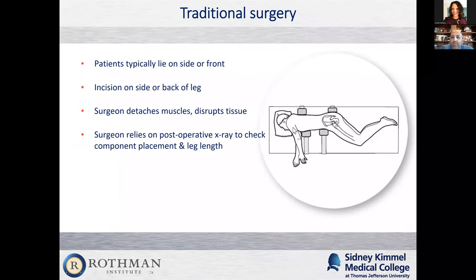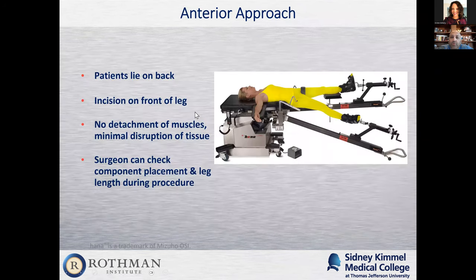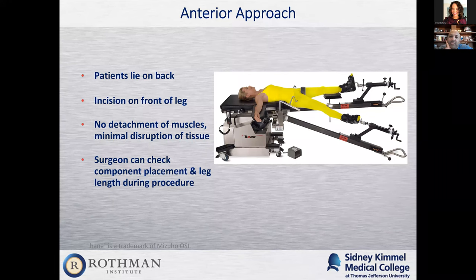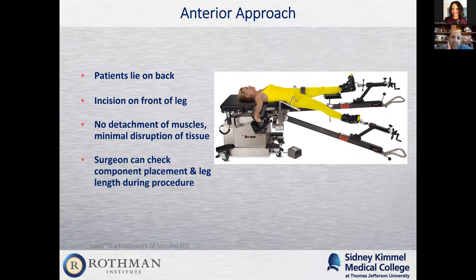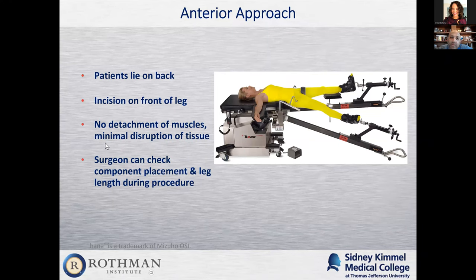Here's a picture of a classic hip replacement with the patient lying on their side — the surgeon goes through the side or the back and has to detach muscle and disrupt tissue. With an anterior approach, we have this device called a HANA table. Patients are under anesthesia so they don't feel their legs being manipulated. We can get into the joint without damaging muscle or tissue, and we can also use an x-ray during surgery to check component position and leg length to minimize complications.